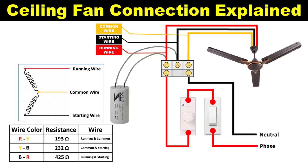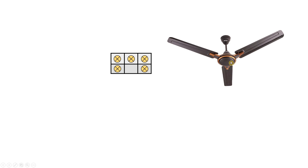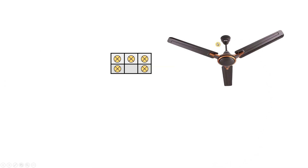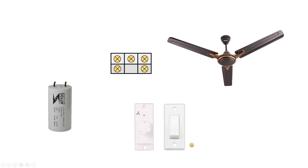Today in this video I will explain the ceiling fan connection in the finest way. I will cover three things: first, how to identify the wires coming out of the fan winding; second, how to connect a capacitor; and third, how to connect a regulator and switch to control the fan speed. So let's start the video.